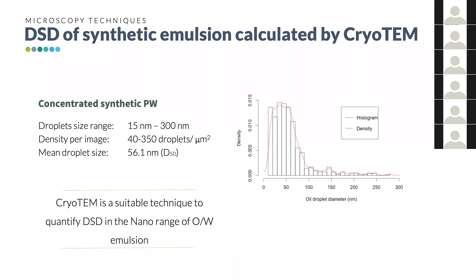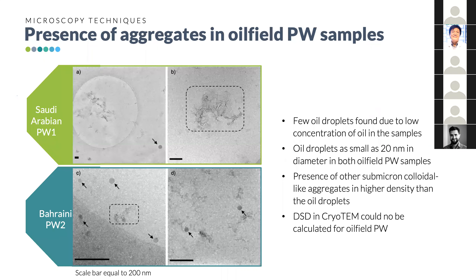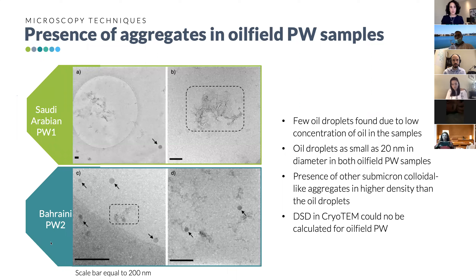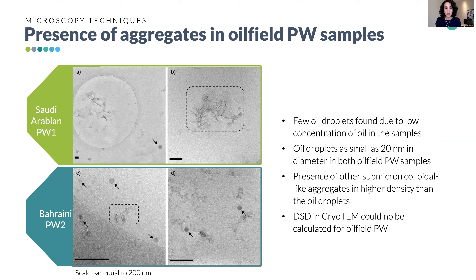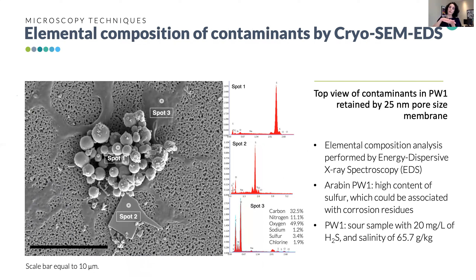We applied this protocol to the real oil-field produced waters — Saudi Arabian PW1 and Bahraini PW2. As expected we found some oil droplets, but very few in density. We still quantified some as small as 20 nanometers. The most interesting finding was the presence of other submicron colloidal aggregates — visible as smudges — found in higher density than the oil droplets. Because the sample had very low oil concentration, we decided to filter the produced water and analyze what was retained on the membrane.